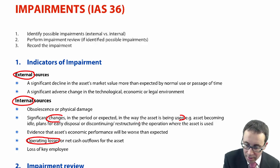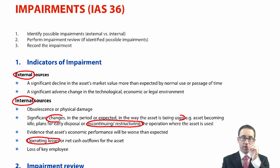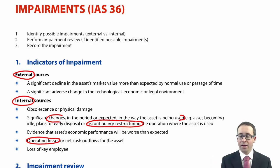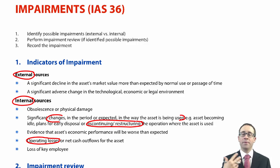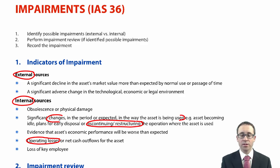You could have a discontinuing or restructuring of an operation which changes the use of the asset. The other indicators you've seen previously in F7, so I don't need to spend much time on them. From a P2 perspective, the ones regularly seen are discontinued or restructuring of operations and operating losses that lead to an impairment review.